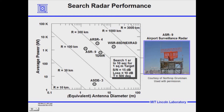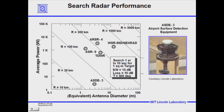The ASR-9 has an average power of about a kilowatt, but a peak power of about a megawatt — so the duty cycle is about one-thousandth. It transmits pulses about every millisecond, and its equivalent antenna diameter is on the order of one to two meters.